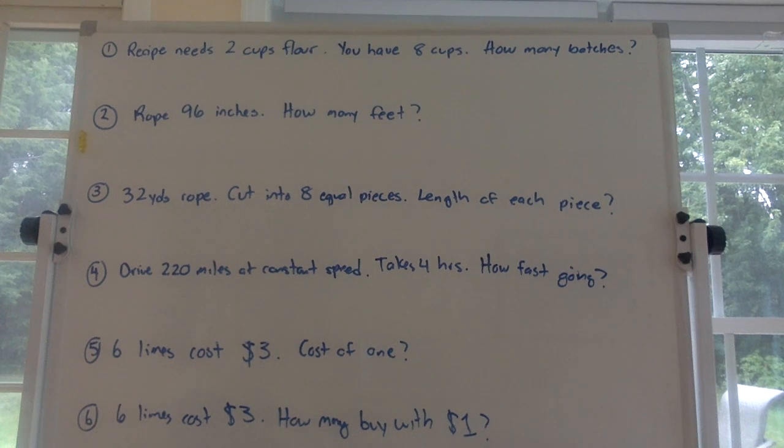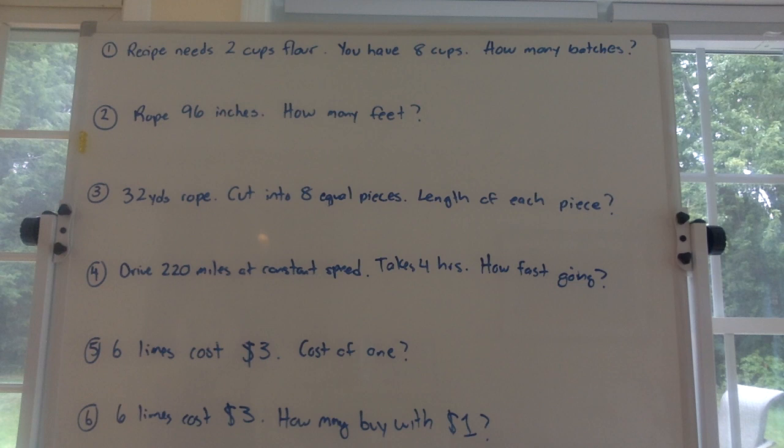Hello everybody. In this video I'm going to talk about the two different interpretations of division. One of them is called 'how many groups' and the other one is called 'how many in each group.' Let's do some problems and we'll see as we go along what the difference between the two interpretations is.